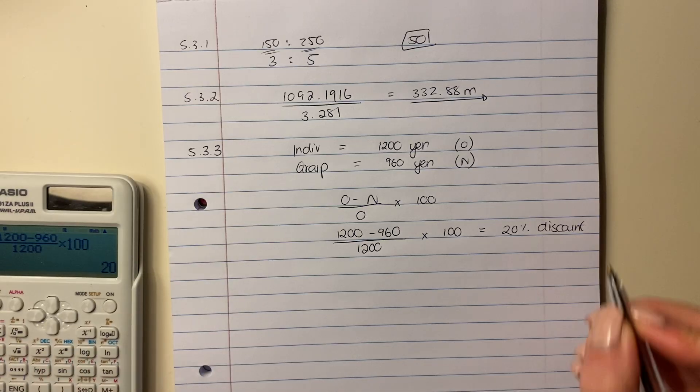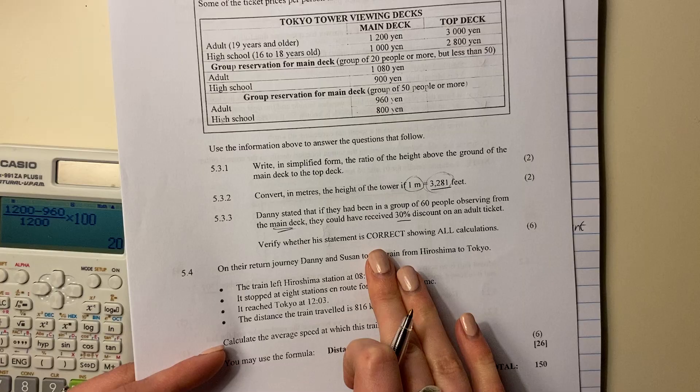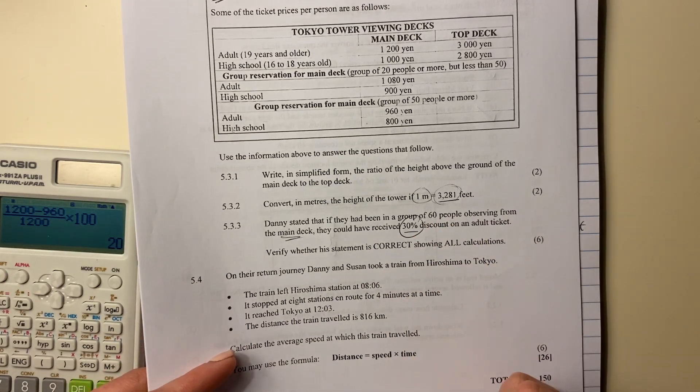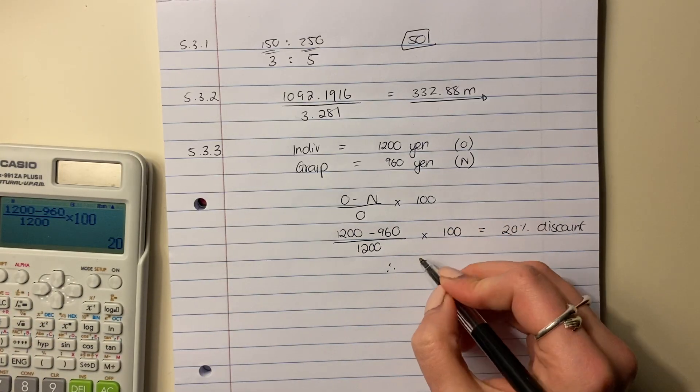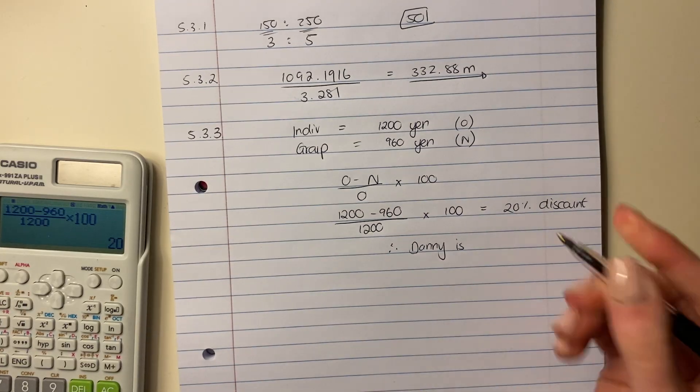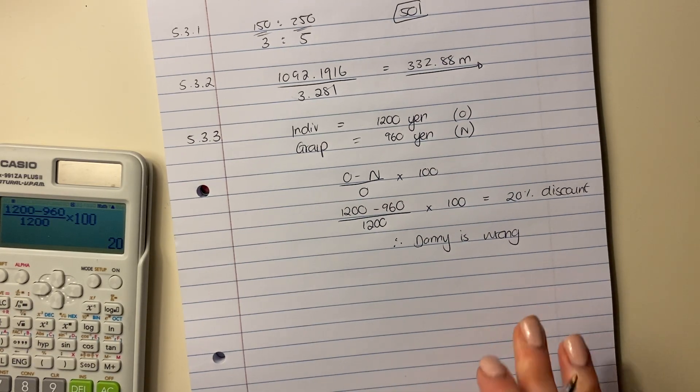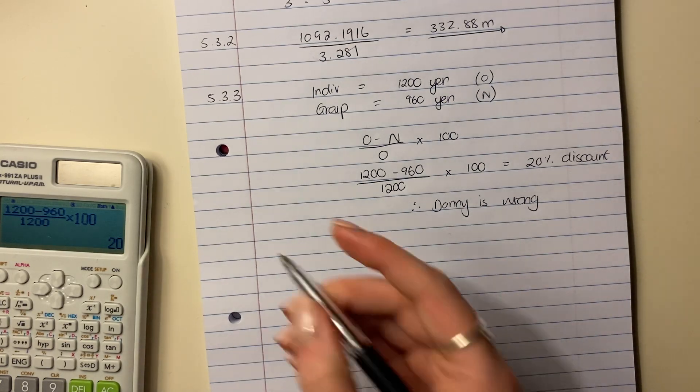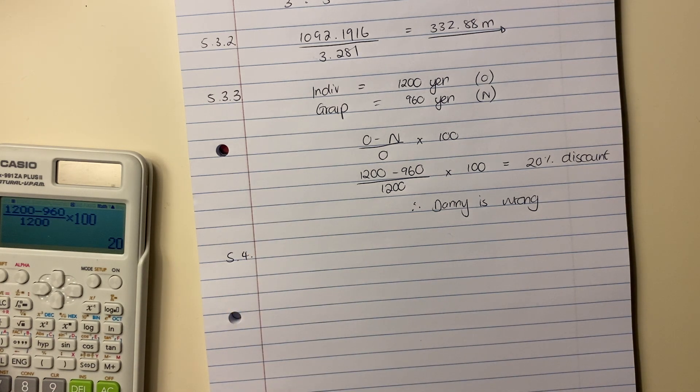Now what's important here is you can't just leave it at that. The question specifically asked, verify whether his statement is correct. So you have to say, is he correct or not? He said that it would be 30%. So we say, Danny is incorrect or wrong. You have to put that conclusion. There's a mark allocated to that. Let's move on to the very last question of this video and this question paper.